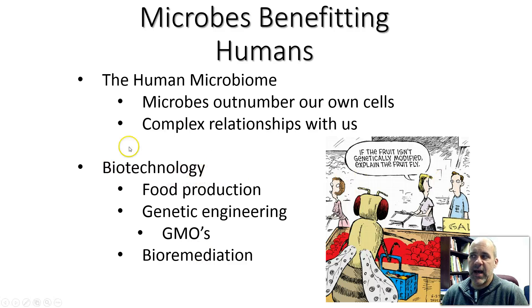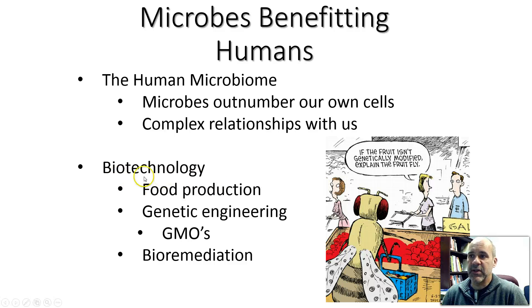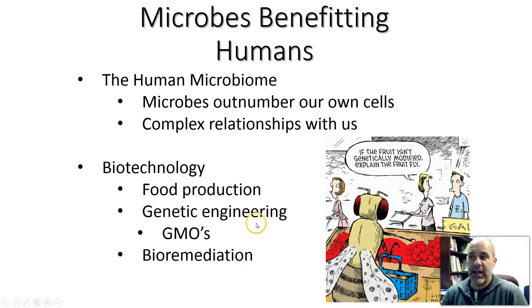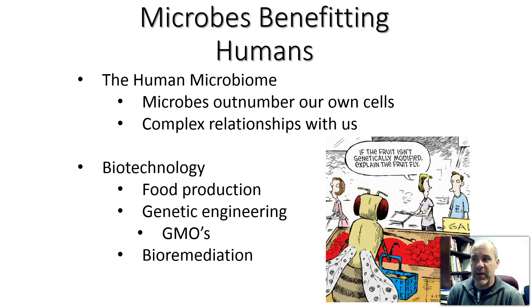Biotechnology is a hot area these days. It basically involves taking advantage of biology in various ways to advance human health, technology, and food production. For example, things like yogurt, cheese, beer, and wine are among some of the earliest examples of biotechnology, made using microorganisms. More recently, over the past 40 years or so, we've developed skills in genetic engineering — where we can take a gene, a piece of DNA from one living thing, and move it into a different living thing to give it a new trait it didn't have before.